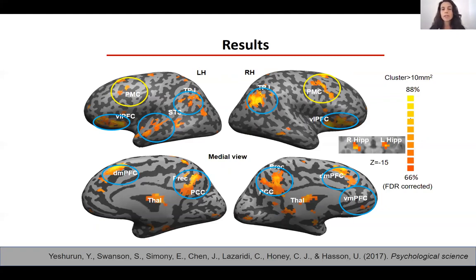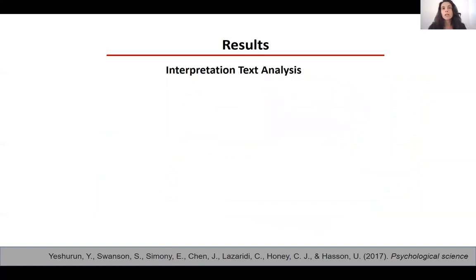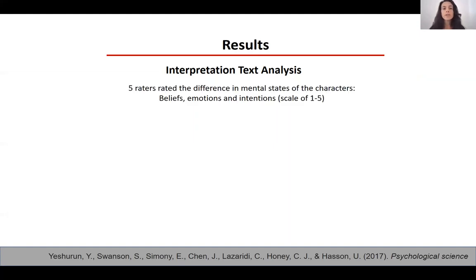Next, we wanted to test whether there is a correlation between the difference in neural response and the difference in interpretation. To quantify the difference in interpretation, professional screenwriter Cristina Lazzaridi, a co-author on this paper, divided the Salinger story into 179 action units. We had five independent raters rate the difference in the mental states of the characters between someone exposed to the cheating context versus the paranoia context — a second-order theory of mind task requiring them to think about mental states another person would attribute to the story's characters.